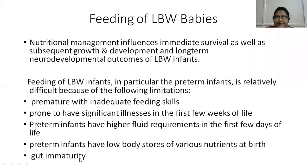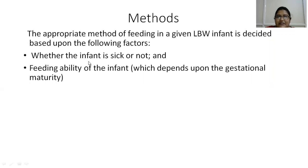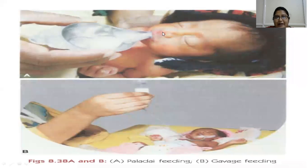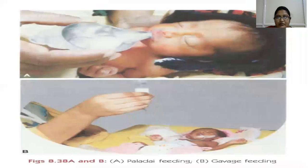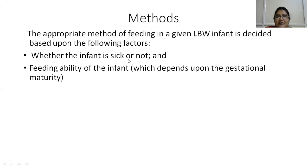There is also gut immaturity in preterm infants. The appropriate method of feeding in a given low birth weight infant is decided based on whether the infant is sick or not and the feeding ability of the infant depending upon gestational maturity. Methods include paladai feeding and gavage feeding through orogastric or nasogastric tube. If the newborn is sick due to respiratory conditions with ventilator dependence, or associated with shock, seizures, hypoglycemia, or surgical conditions, we evaluate first. Once the active phase is over and the infant is hemodynamically stable, we begin enteral feeds.